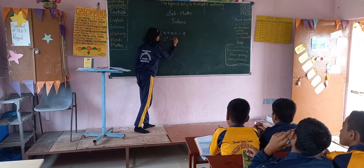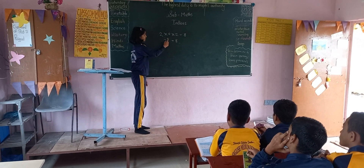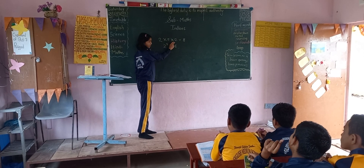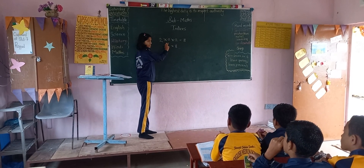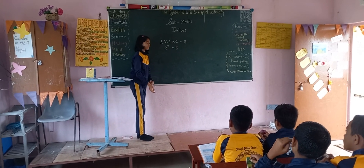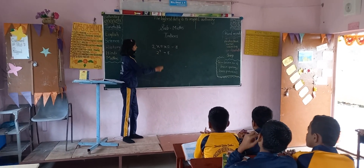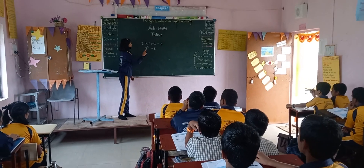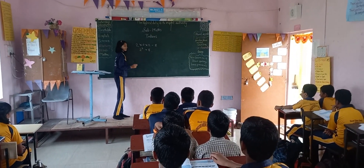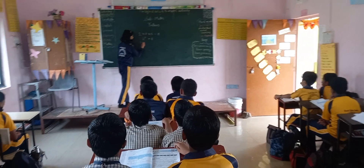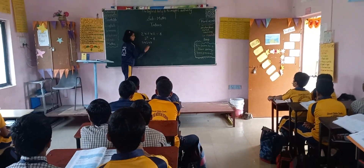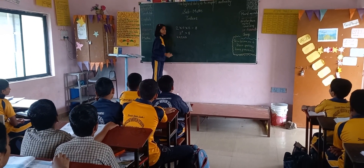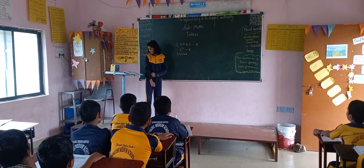This is the base and this is the index. 2 is taken 3 times, so the index written is 3. When the question comes like 2 raised to 3, then it means 2 multiplied by 2 multiplied by 2. This is the base and this is the index — index is also called the exponent.